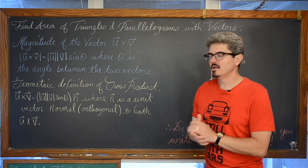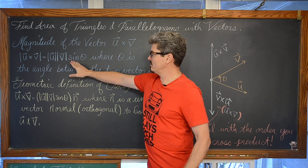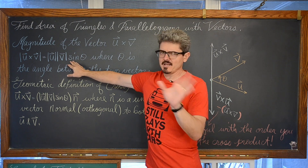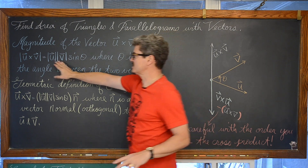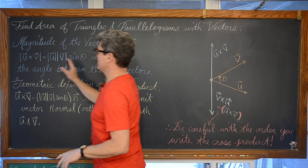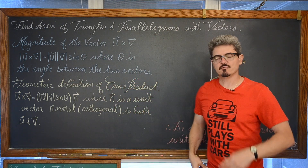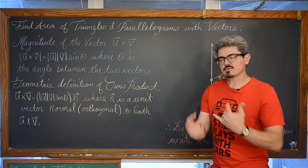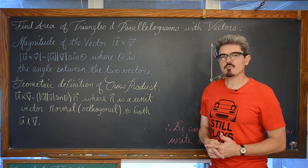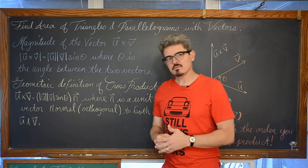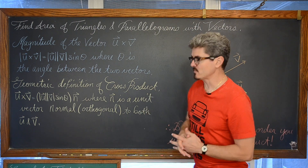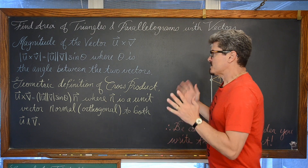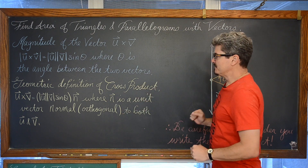Now it looks very similar to the formula that we worked with — not exactly the same, but similar to that formula we learned for finding the geometric definition of the dot product between two vectors, or the formula used for finding the angle between two vectors. So it is similar — don't get confused.